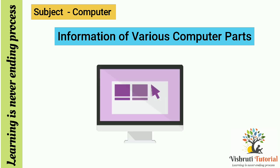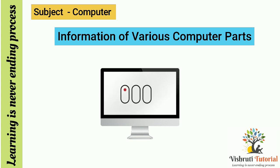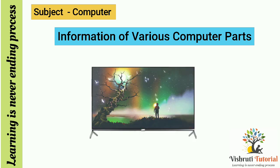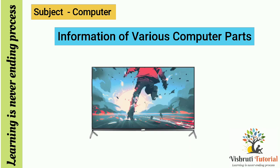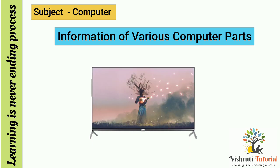Children, you have seen this part of a computer. Can you name this? Yes, this is a monitor. A computer monitor is an electronic device that shows pictures for computers. Monitors often look similar to televisions. The main difference between a monitor and a television is that a monitor does not have a television tuner to change channels. Monitors often have higher display resolution than televisions. A high display resolution makes it easier to see smaller letters and fine graphics.